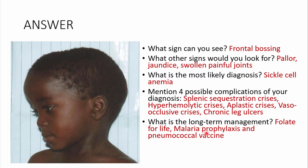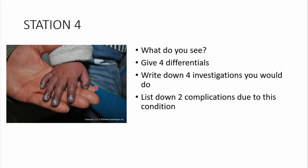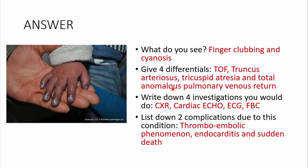Station 4: Study the picture shown. What do you see? Give four differentials. Write down four investigations you would do. List two complications due to this condition. From this image, the fingertips are blue — this is peripheral cyanosis — and the fingers also appear clubbed, so we note finger clubbing as well as peripheral cyanosis.